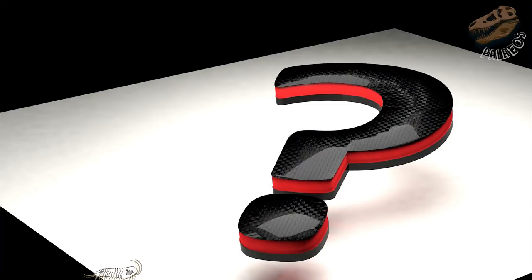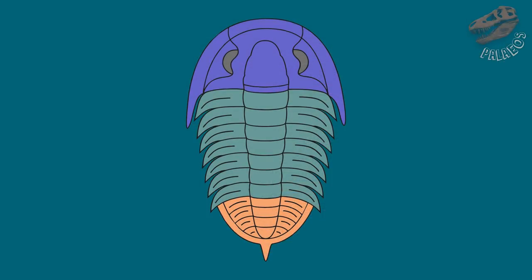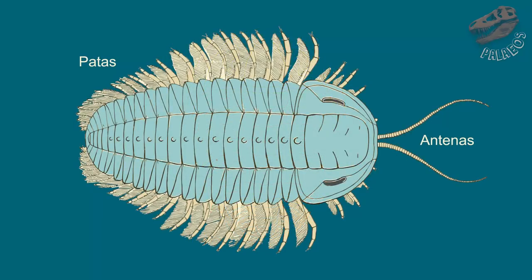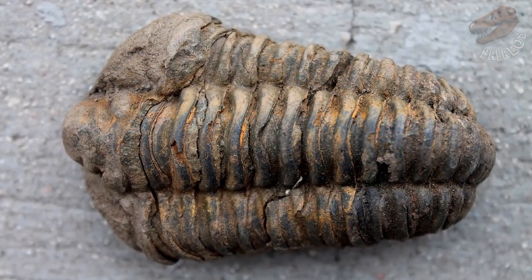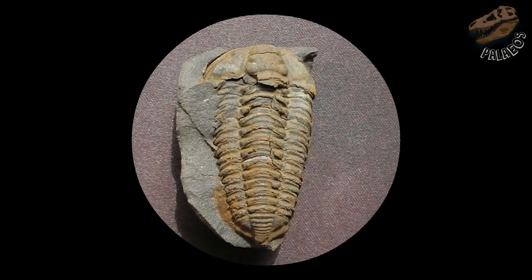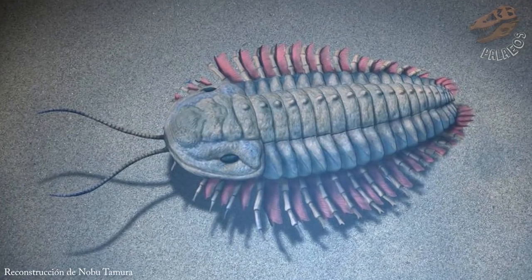¿Qué caracterizaba a un trilobite? Ya vimos lo de los tres lóbulos, pero además su cuerpo estaba regionalizado en tres segmentos: la cabeza o cefalón, el tórax y el pigidio. Algo que no solemos ver en los fósiles son las antenas y las patas, pues estas estructuras rara vez se fosilizaban. Así que, aunque veamos trilobites así, en realidad vivos lucirían con antenas y patas birramias.